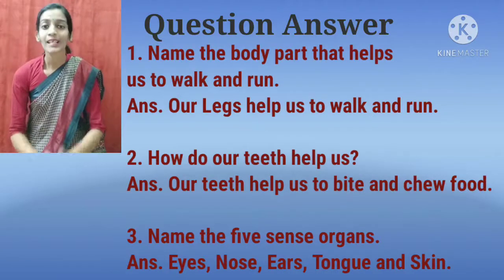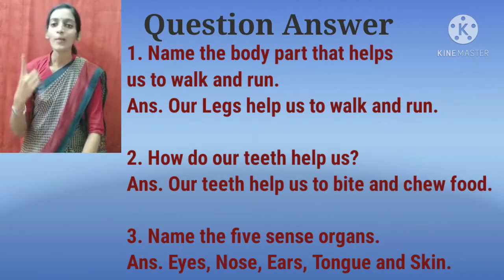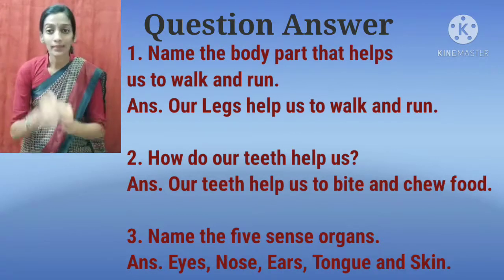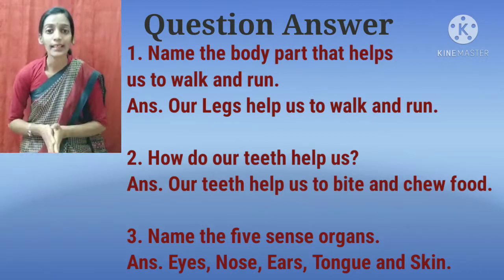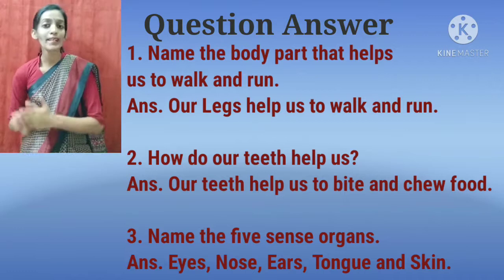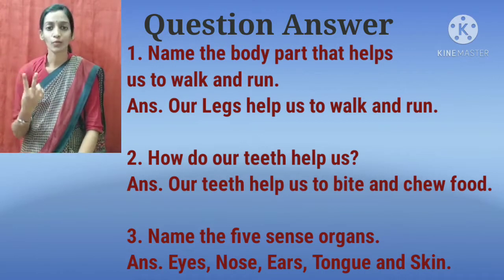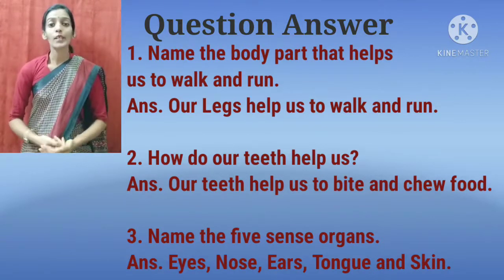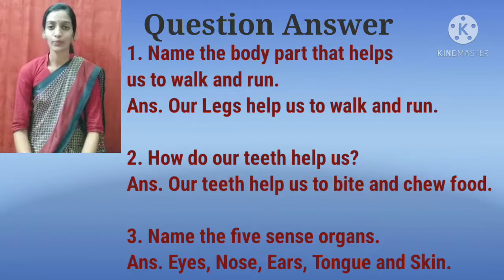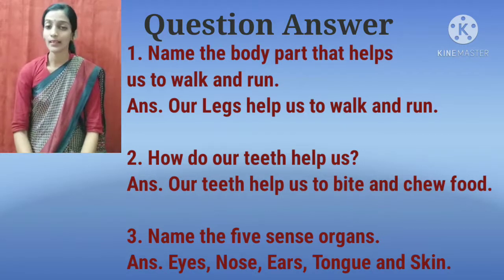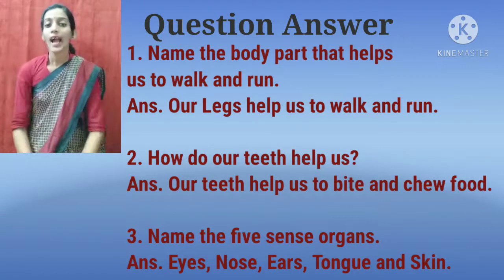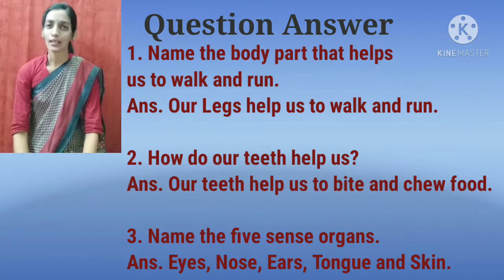Now it is time to see some questions from this chapter. Number 1, name the body part that helps us to walk and run. The answer is our legs help us to walk and run. Number 2, how do our teeth help us? Our teeth help us to bite and chew food. Number 3, name the 5 sense organs. The answer is eyes, nose, ears, tongue and skin — they are called sense organs.